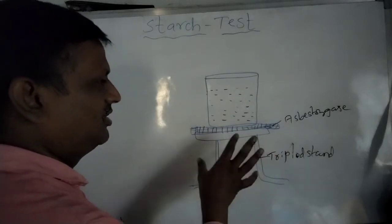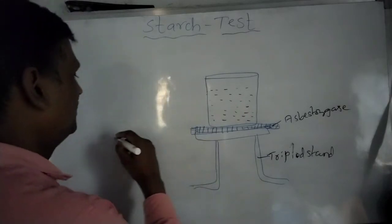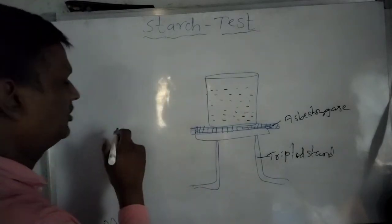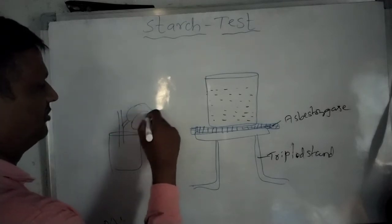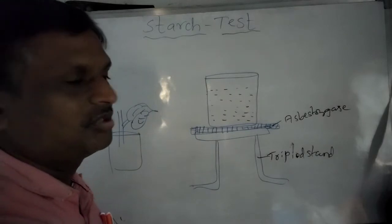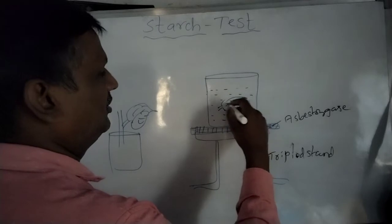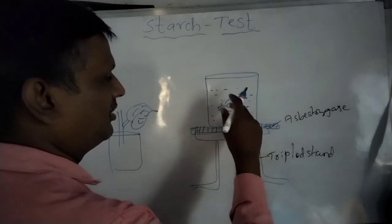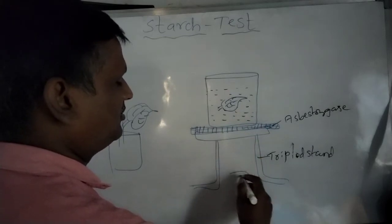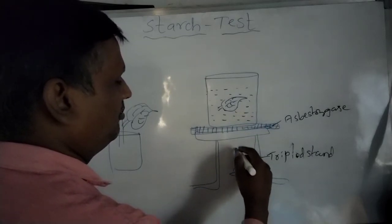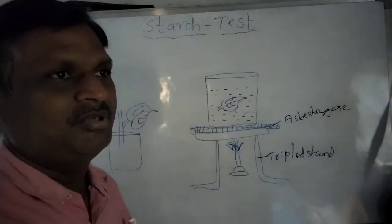Next, select a healthy leaf from a potted plant. The healthy leaf should be placed into the beaker of water and heated with the help of a Bunsen burner for some time — the leaf should be boiled or heated for some time.